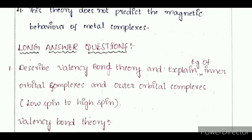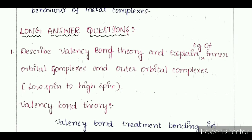Now I am telling about longest answer questions. First one: describe valence bond theory with examples of inner orbital complexes and outer orbital complexes, low spin to high spin.